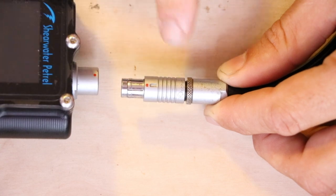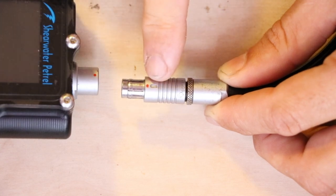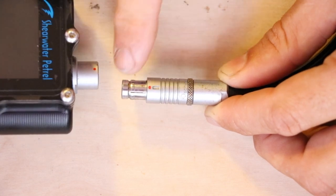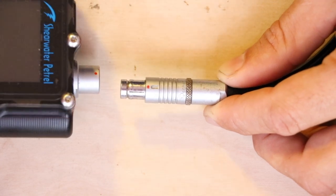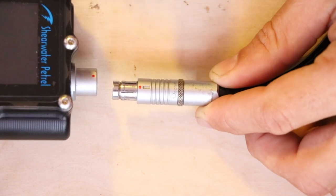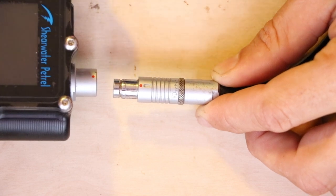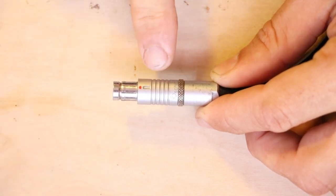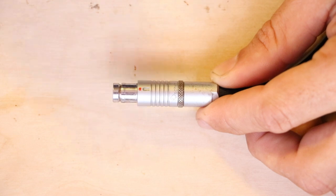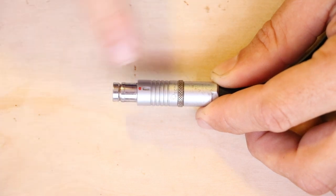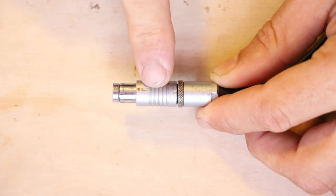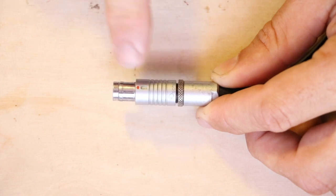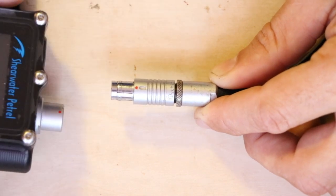Now a common problem that I've seen is people leaving this connection permanently installed into their computer. And what can happen is over time saltwater corrosion will seize this mechanism in place and prevent it from sliding rearward and unlocking it. So a good rule of thumb is to make sure that you disconnect this frequently and make sure that you clean it. Make sure this sliding mechanism operates freely and also the locking collar below it.